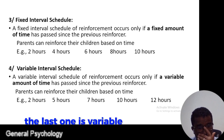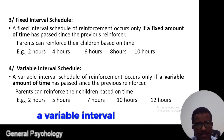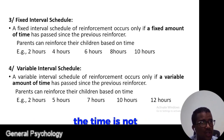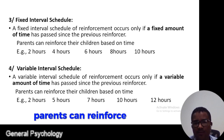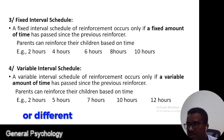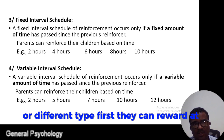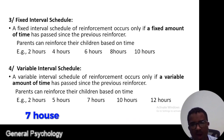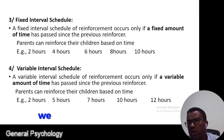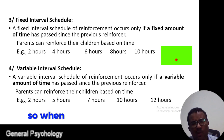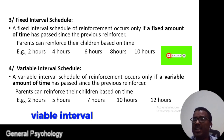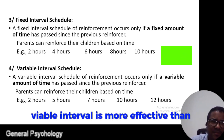The last type is the variable interval schedule. A variable interval schedule of reinforcement occurs after a variable amount of time — the time is not known in advance. For example, parents can reinforce their children at variable times: two hours, then five hours, seven hours, ten hours, 12 hours, 15 hours, 17 hours. We don't know when they will be rewarded. When comparing variable interval with fixed interval, variable interval is more effective than fixed interval.